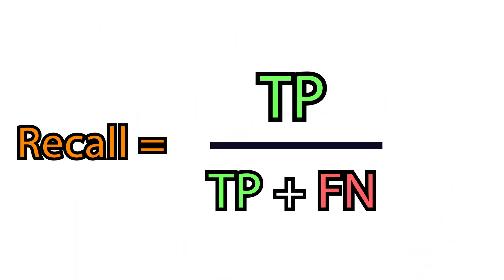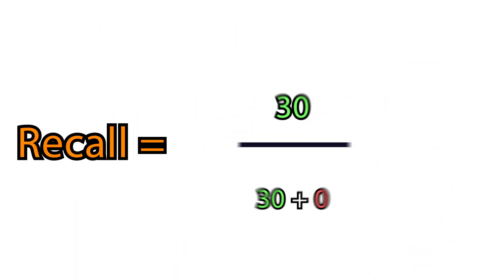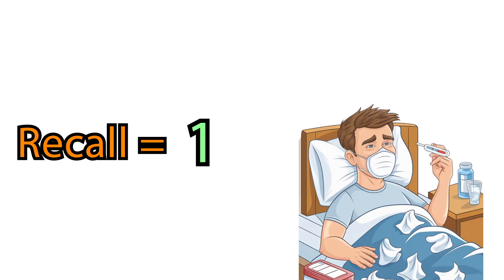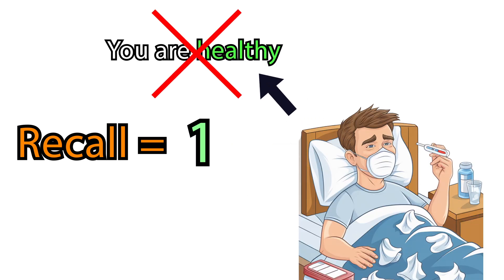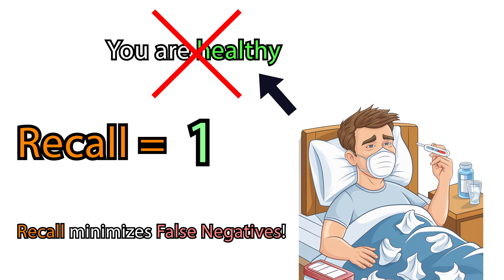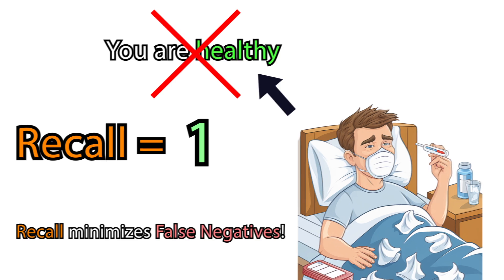Recall, on the other hand, targets false negatives, meaning if we have very high recall, the model identifies everyone who has the flu and does not miss anyone who is sick.